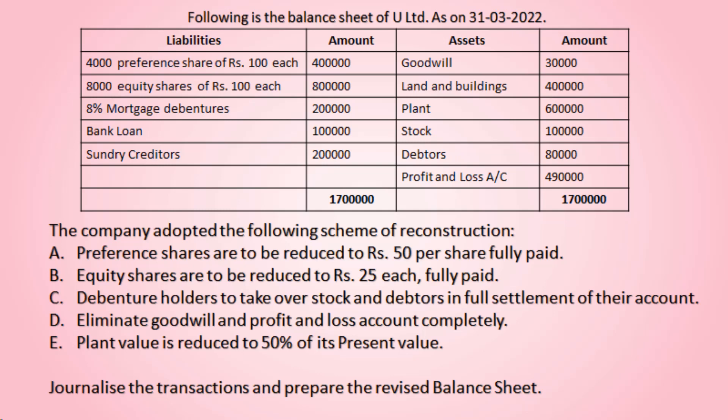Debenture holders are to take over stock and debtors in full settlement of their account, meaning debenture holders are fully sacrificing by taking the stock and debtors. The value of stock and debtors taken over by debenture holders will be settled, and the remaining balance will be transferred to capital reduction account. Additionally, plant value is reduced to 50 percent of its present value — the plant value is 6 lakh, so 50 percent of 6 lakh is reduced.